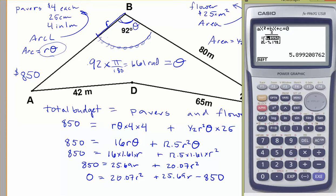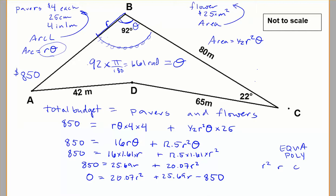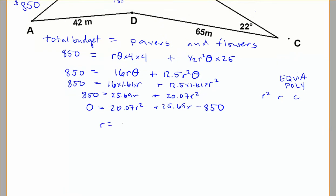And press solve. Let's see what we get. So you can see there we get a positive 5.899 and a negative 7.179. Now, a negative solution doesn't make any sense for a radius because we don't want a negative radius. So we're just going to go with that positive one.